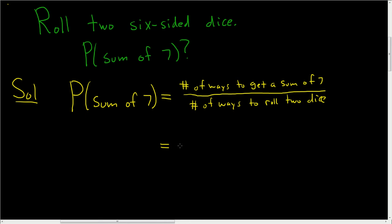So this is equal to a fraction. Let's think about the denominator first. We have two six-sided dice, and there are six ways for the first die to land and six ways for the second die to land. So 6 times 6 is 36. So there are 36 ways to roll two six-sided dice.